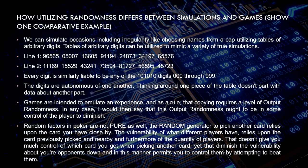The vulnerability of what different players have relies upon the cards previously picked and in hand, and also on the number of players. That doesn't give you much control over which card you get when picking another card. Yet it does reduce the vulnerability of your opponent, and in a way allows you to control them by attempting to beat them. This is how games and simulation can differ in randomness.